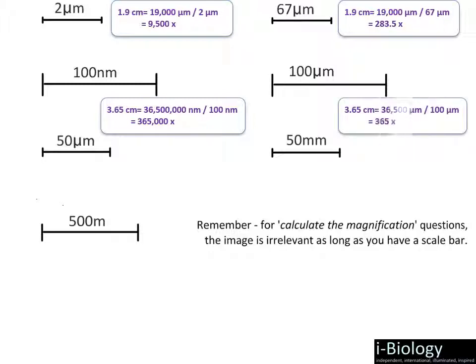In the next example, measuring about 2.15 centimeters or 21.5 millimeters gives 21,500 micrometers divided by 50 micrometers, equaling 430X magnification.